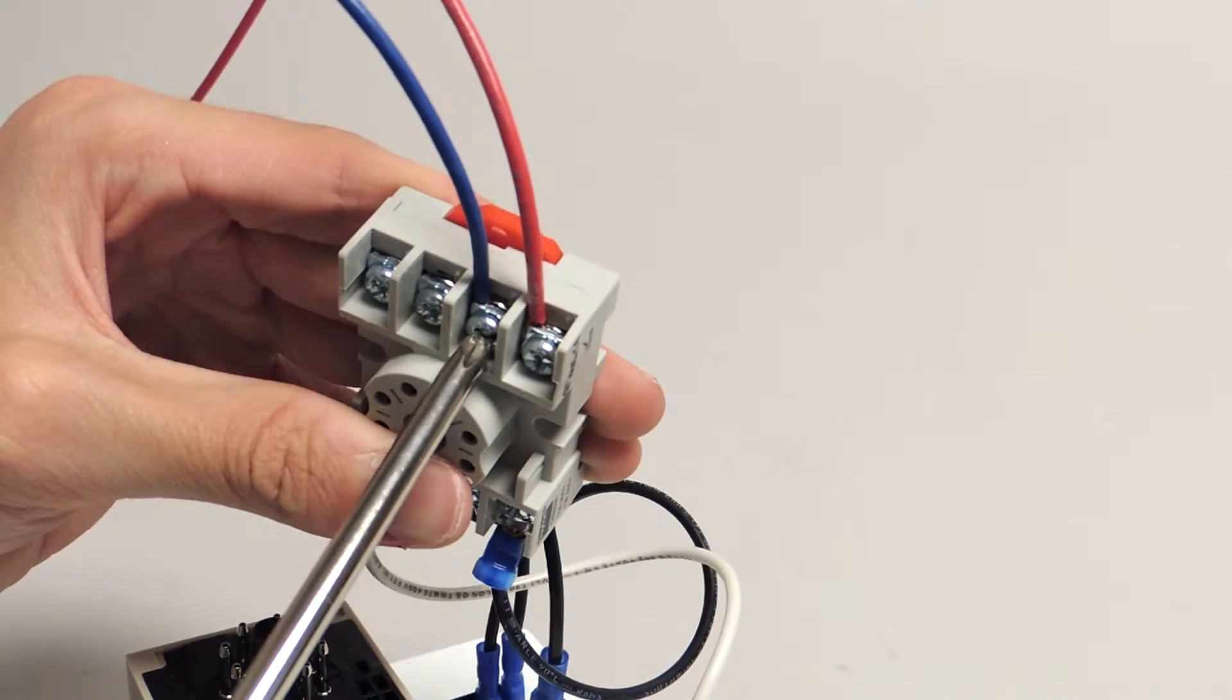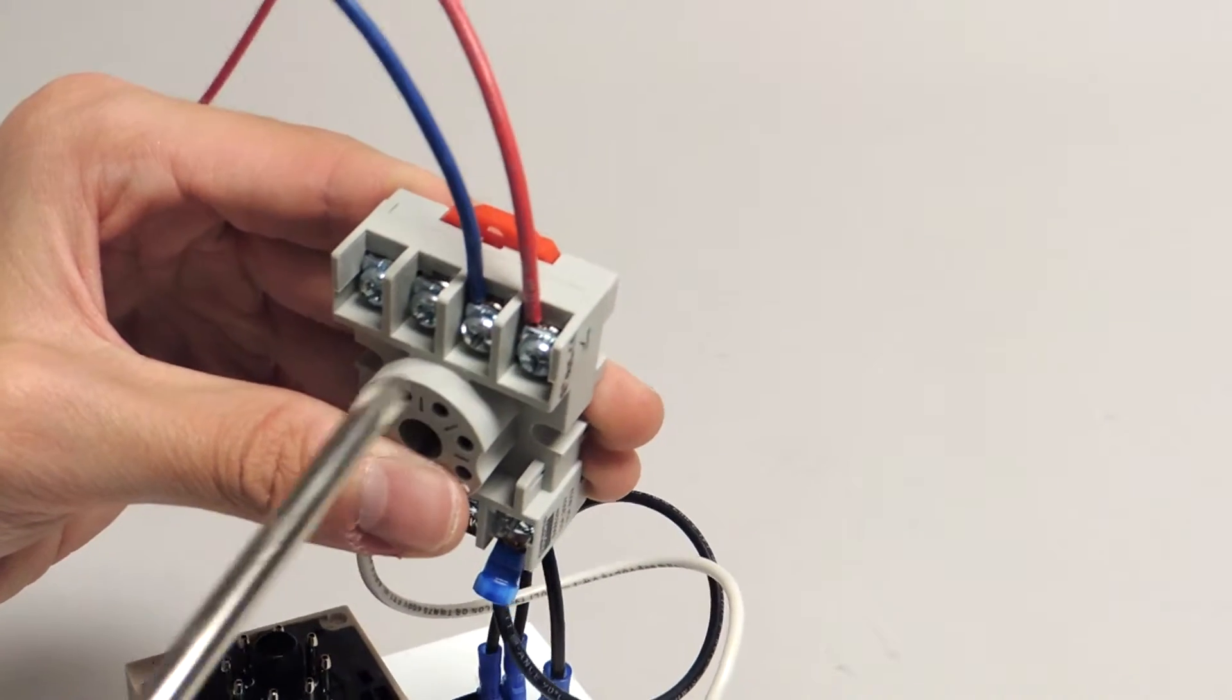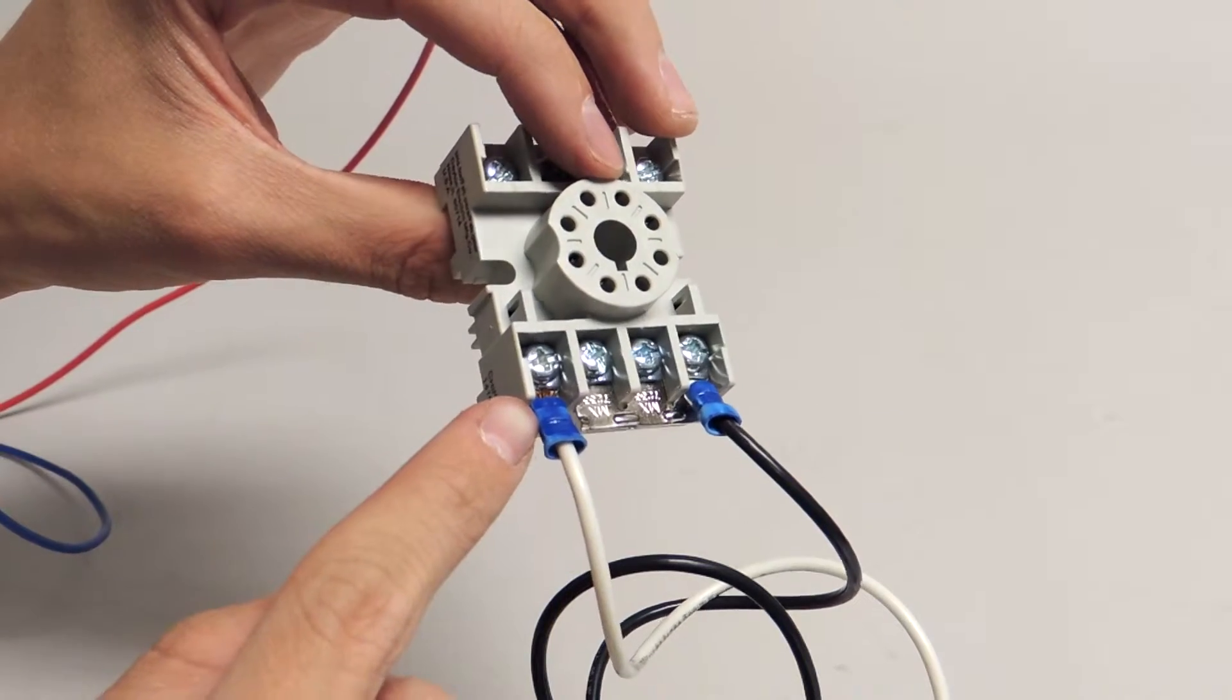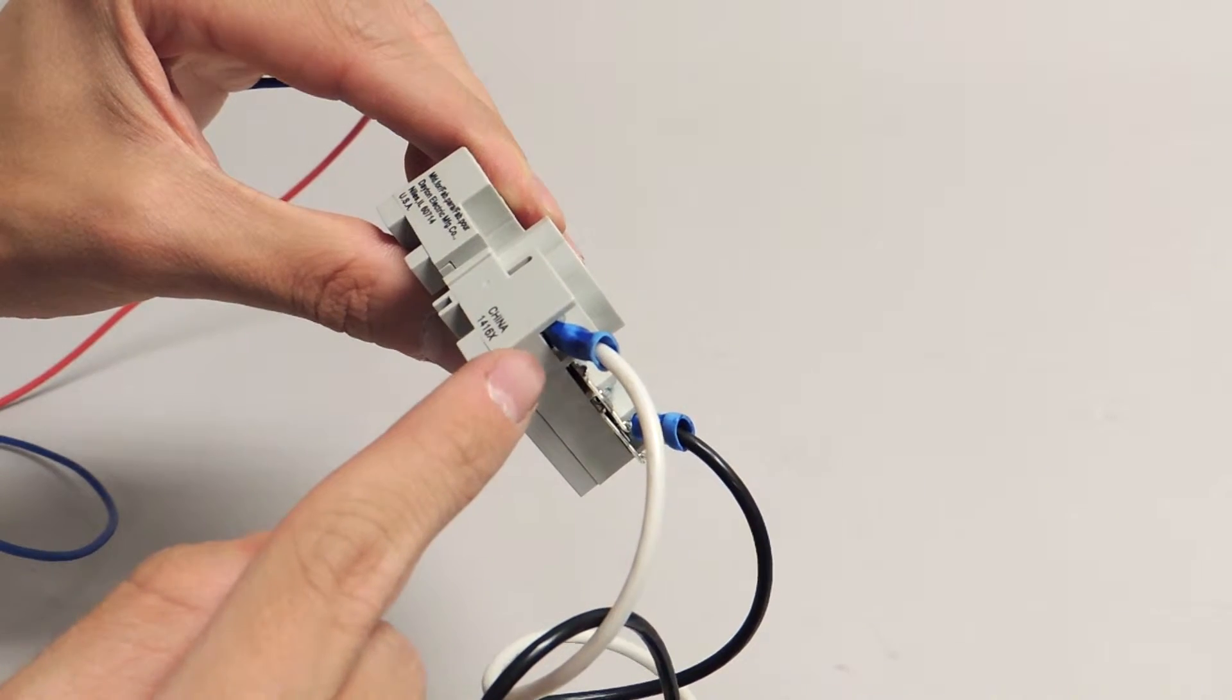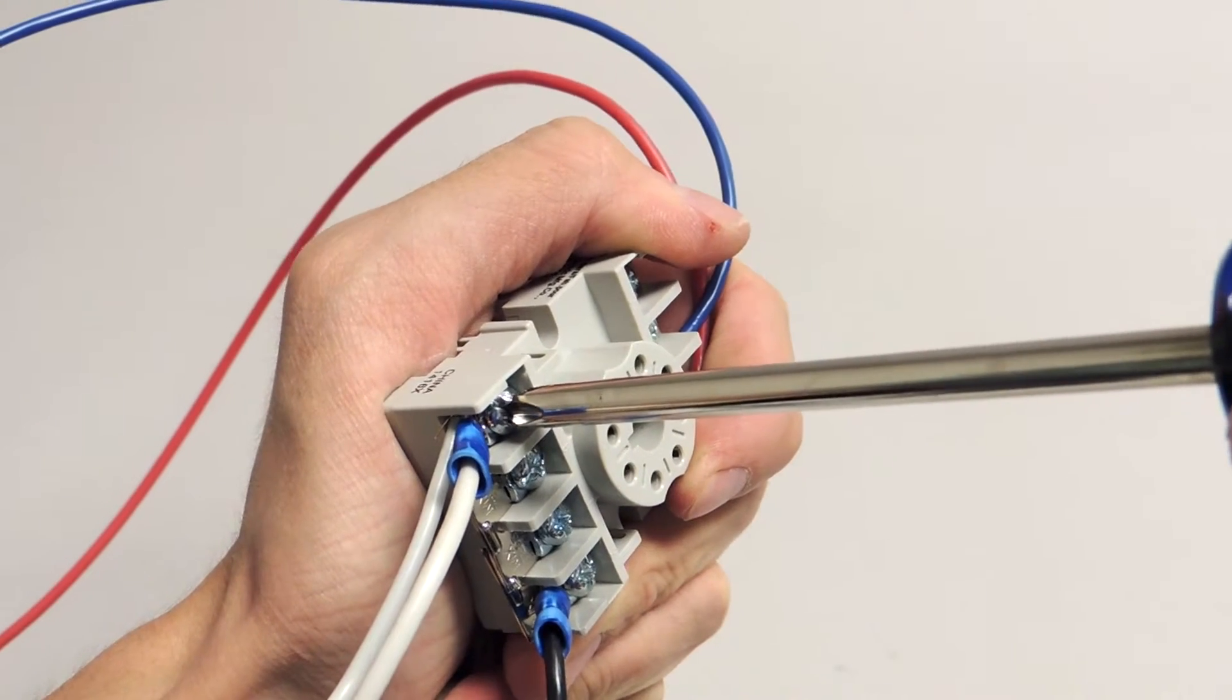Connect the blue wire to port number four. Put the white wire in port number seven. It will need to fit underneath the wire already there.